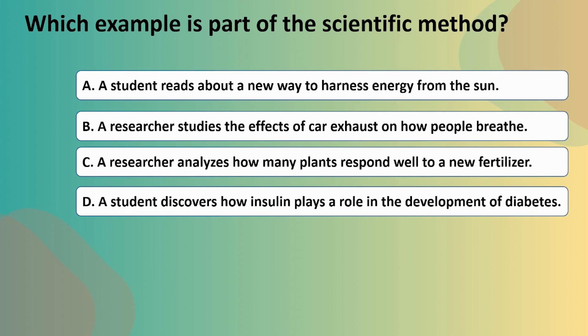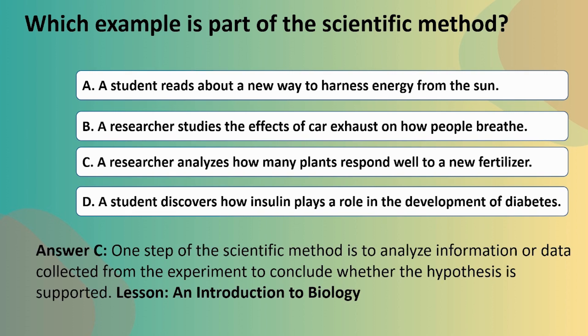Take a moment to look at your answer options, but try to think back to what the scientific method really is. You have to identify a problem, conduct some research, formulate a hypothesis, and then conduct an experiment, observe that experiment, and come to a conclusion. So which answer option best communicates that? Answer option C: a researcher analyzes how many plants respond well to a new fertilizer. That's because one of the steps is that you have to analyze information or data collected from the experiment to conclude whether the hypothesis is supported.